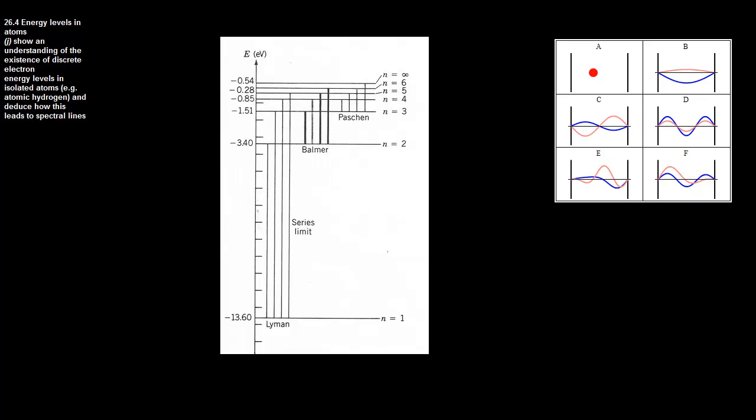Ok so now we're going to talk about chapter 26.4 which is the energy level in atoms. And this is basically the idea that if I have an atom here and it has an electron, this electron can only occupy certain energy levels. And I have a kind of energy diagram here for hydrogen and you'll probably see this diagram quite a lot and we use hydrogen a lot because it's probably one of the simpler ones.